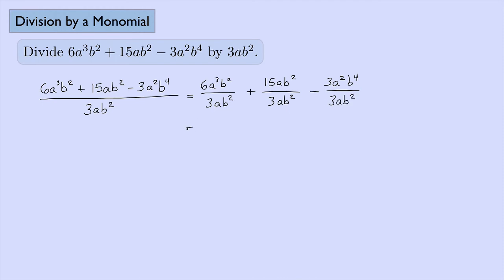Now we look at each term individually. Six divided by three is two; a to the third divided by a gives a squared (3 minus 1 = 2); b squared over b squared cancels. Next, 15 divided by 3 is 5; the a's cancel and the b squareds cancel, so we just have 5. Last term: 3 divided by 3 cancels; a squared divided by a gives a to the first (2 minus 1 = 1); b to the fourth divided by b squared gives b squared (4 minus 2 = 2). So the final answer is 2a squared plus 5 minus ab squared.